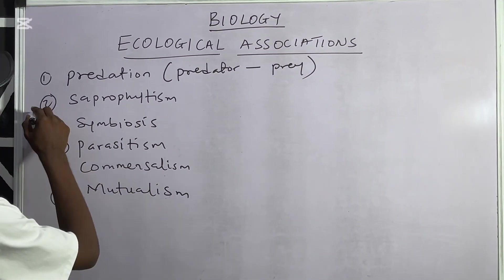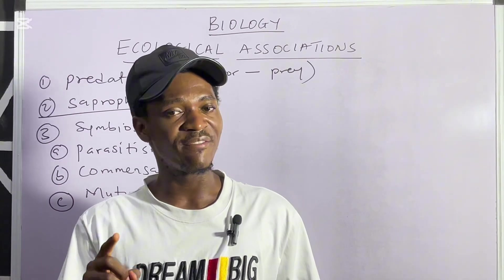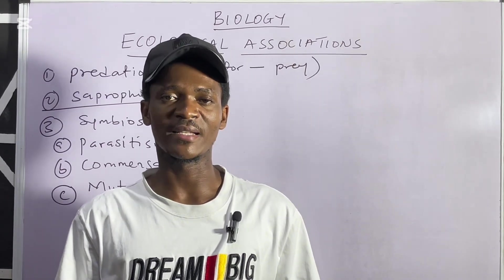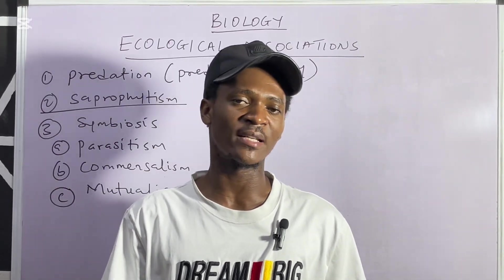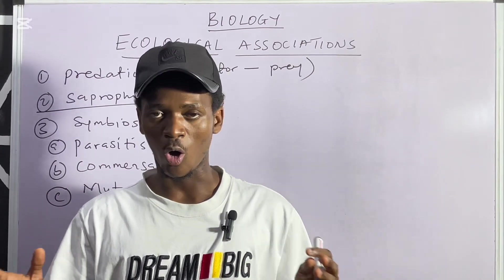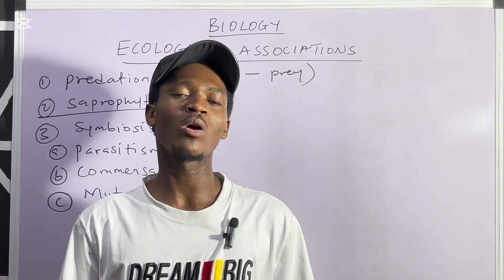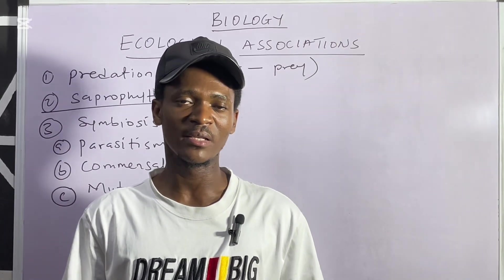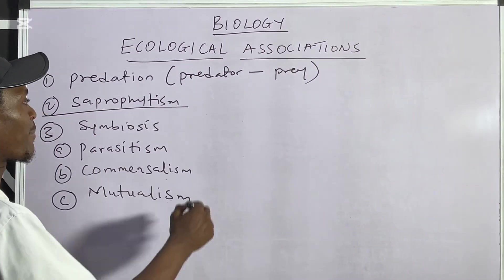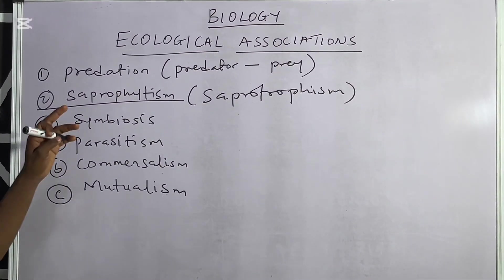The second is saprophytism. Saprophytism is simply an association that involves just a single living organism, and that organism tends to feed on dead decaying organic matter. Such an organism is considered a saprophyte. A classical example is fungi, which feeds on dead decaying organic matter. If a question asks what association involves only a single living organism, the answer is saprophytism. The broader term for saprophytism is saprotrophism.